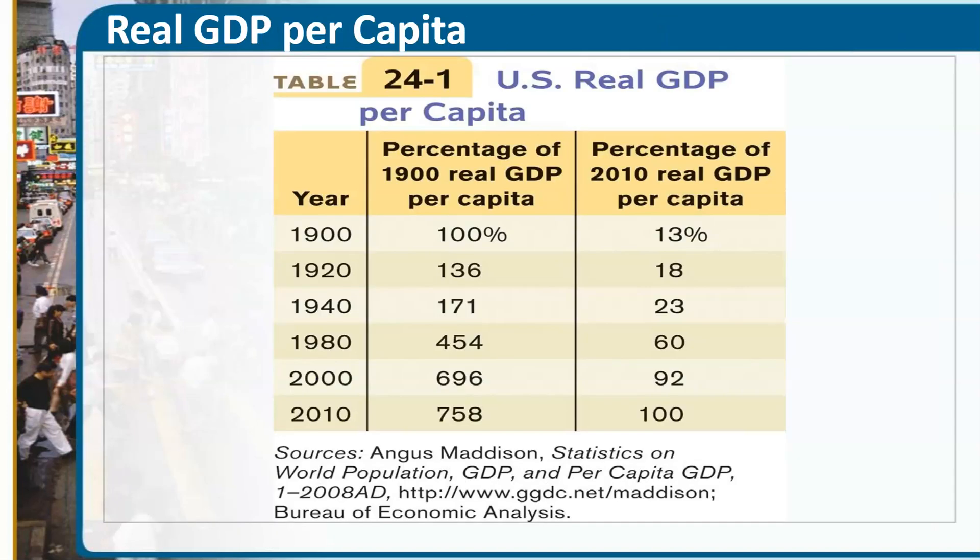Looking at real GDP per capita of the United States, whether we're looking at 1900 or 2010 as the base year, we can see the growth rate is consistent — we are consistently growing our real GDP, and this continues to improve over time. Real GDP is essentially taking inflation out of the picture, so it's focused on GDP alone without inflation, and then per capita is per person. Dividing by the total population gives us real GDP per capita, which is where we get these statistics.